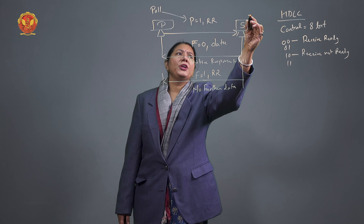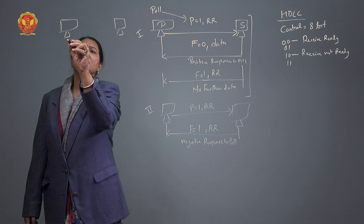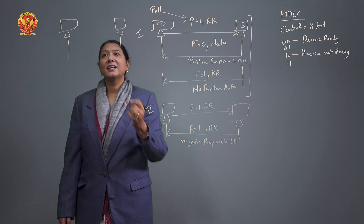When the secondary has no further data to send to the primary, it signals the end of transmission. In the last frame, the secondary sets F=1 along with RR (control bits 00). This indicates no further data — the whole communication for that poll cycle is complete.